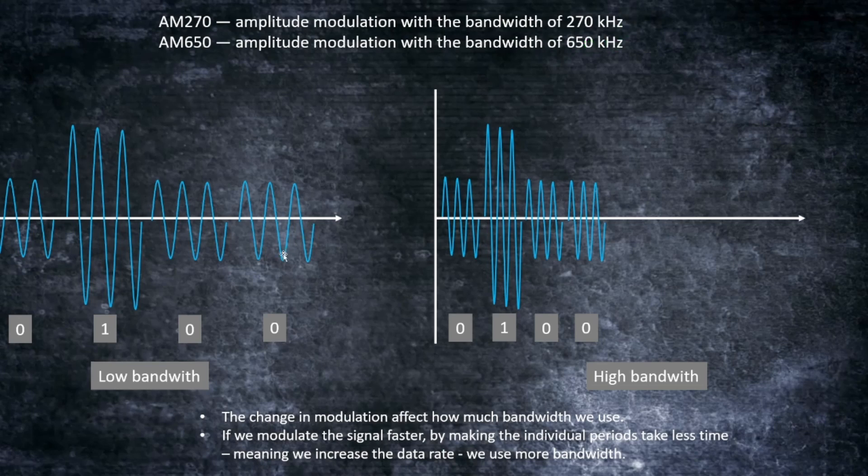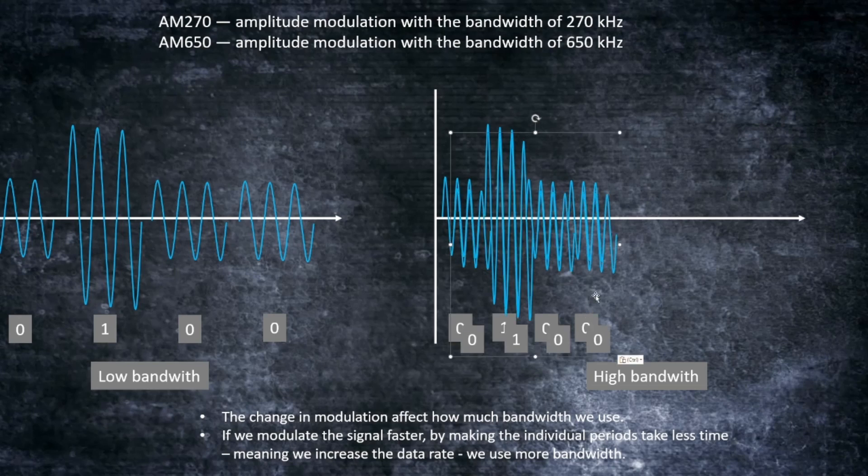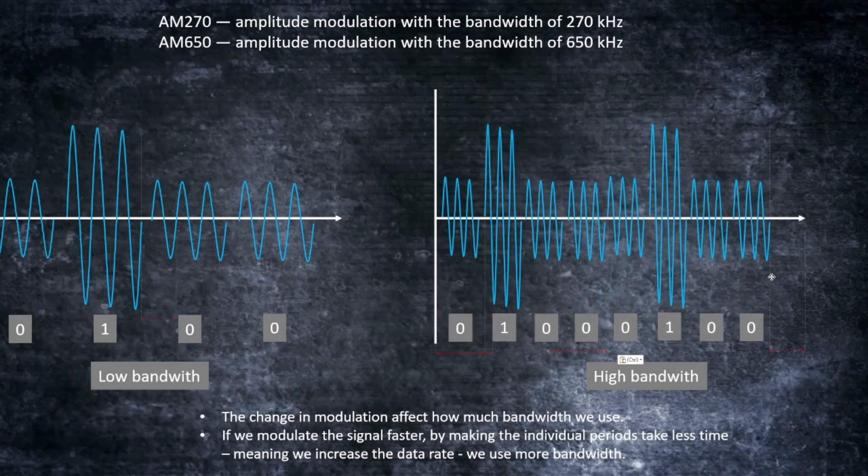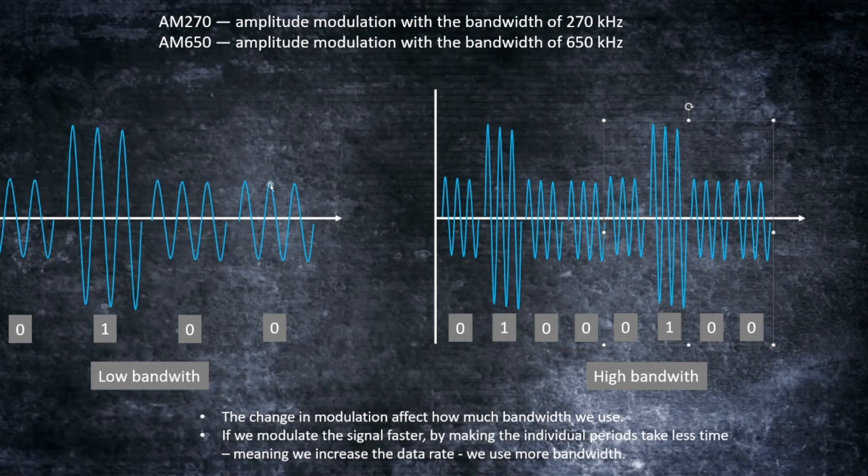And what is the difference? Well, first of all we see here from this signal, as we saw, 0-1-0-0 is a low bandwidth signal. We can take exactly the same signal but we are sending it in just half of the time, so we can actually duplicate this signal and send it again, or send more data—of course it could be something else—but within the same time we are sending more data, so we are having a higher bandwidth. This means that the change in modulation will affect how much bandwidth we are using and how much data you are sending.